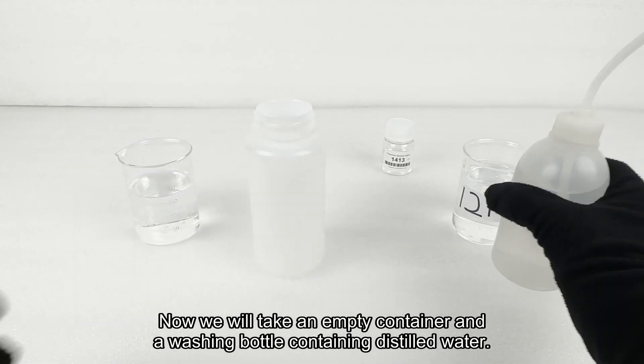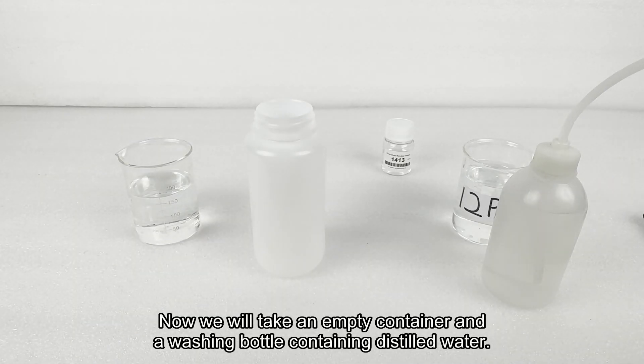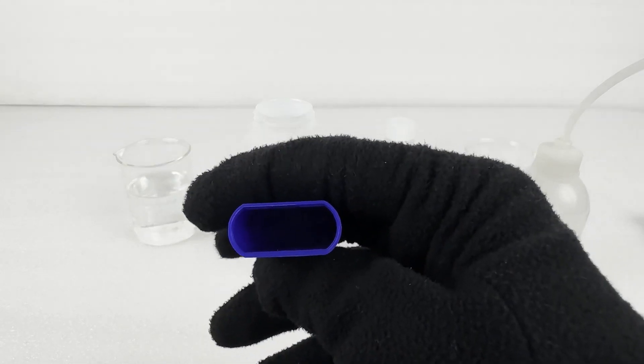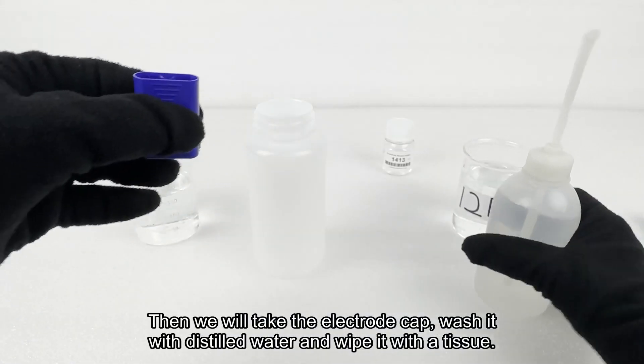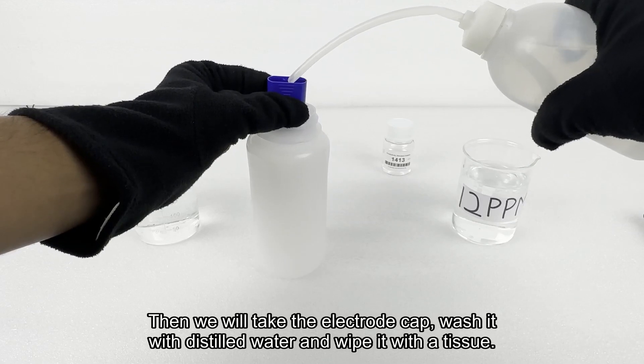Now we will take an empty container and a washing bottle containing distilled water. Then we will take the electrode cap, wash it with distilled water and wipe it with a tissue.